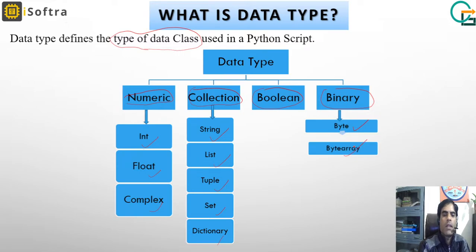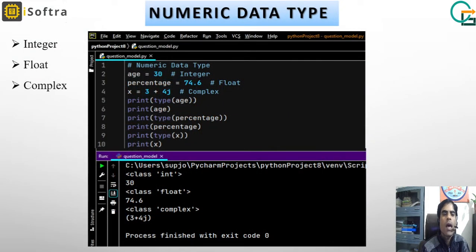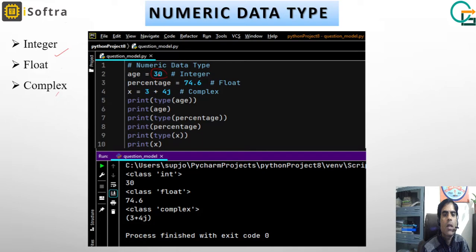First we will discuss numeric type. In numeric type, we have integer, float, and complex. For integer — as you know, here 30 is of type integer. In Python, we have no rule to declare and define a variable. As we assign a value, the variable takes its data type according to that value. So here the value is 30, so the data type of age is integer. We have a special type() function which returns the data type.